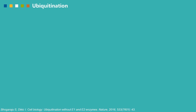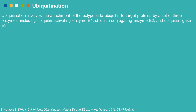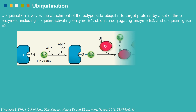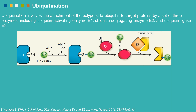Ubiquitination involves the attachment of the polypeptide ubiquitin to target proteins by a set of three enzymes: ubiquitin-activating enzyme E1, ubiquitin-conjugating enzyme E2, and ubiquitin ligase E3. The E1 enzyme first activates the carboxy terminus of the ubiquitin molecule using energy from converting an ATP molecule to AMP and pyrophosphate. The activated ubiquitin is then attached to the sulfur of the E1 active site cysteine residue, and transferred from E1 to E2.